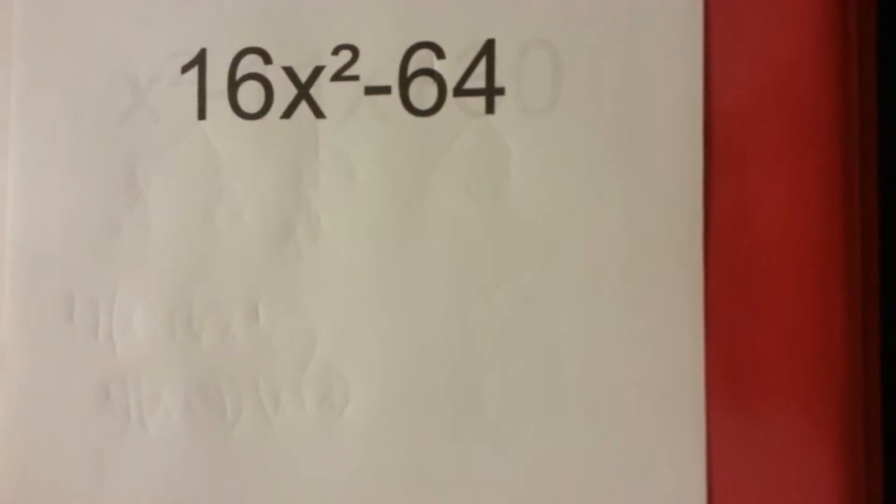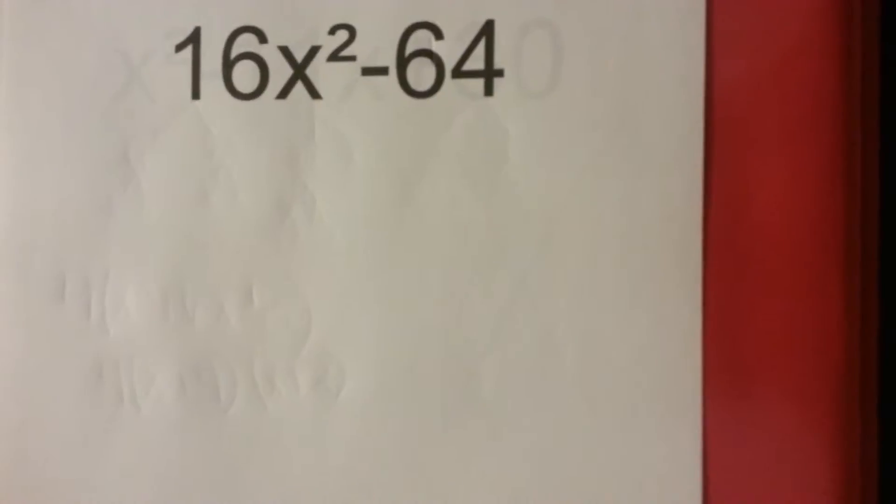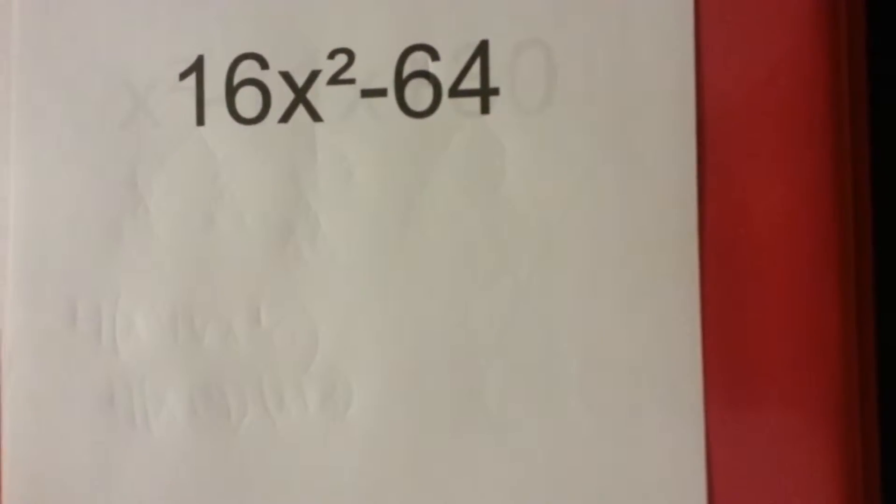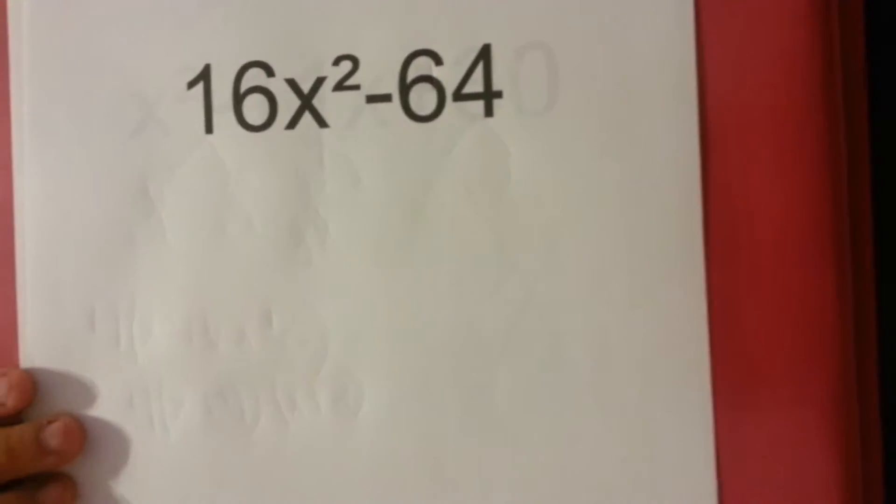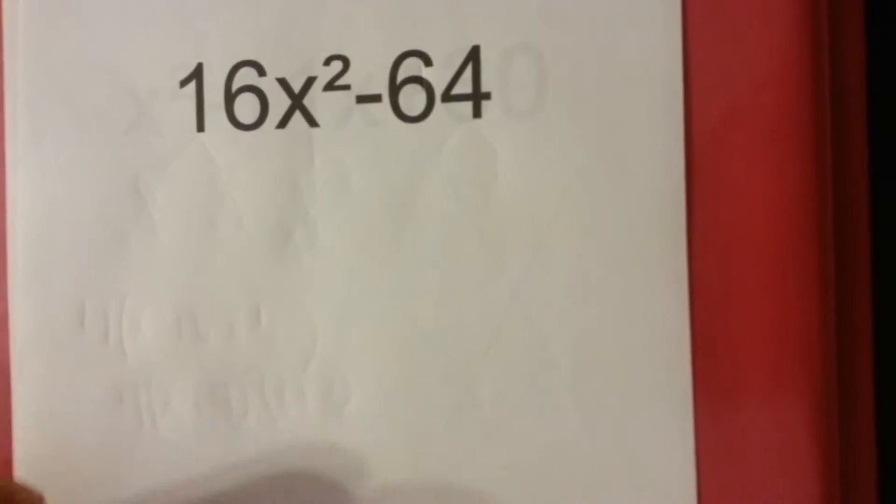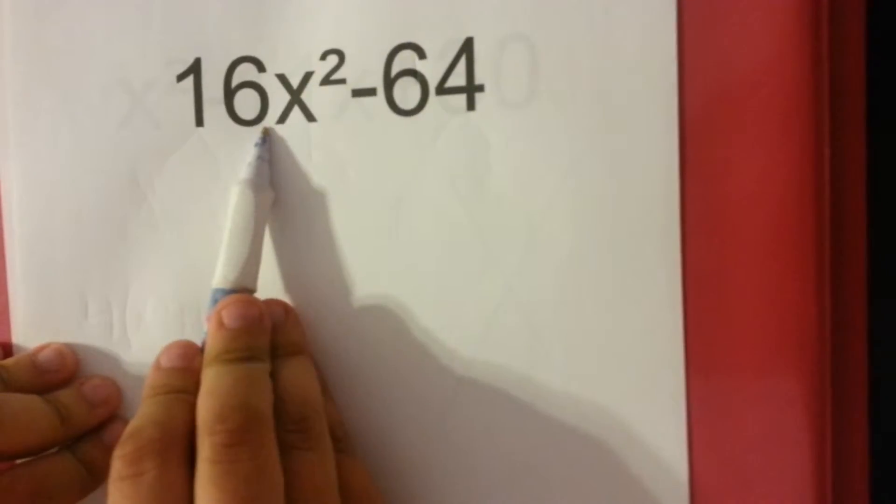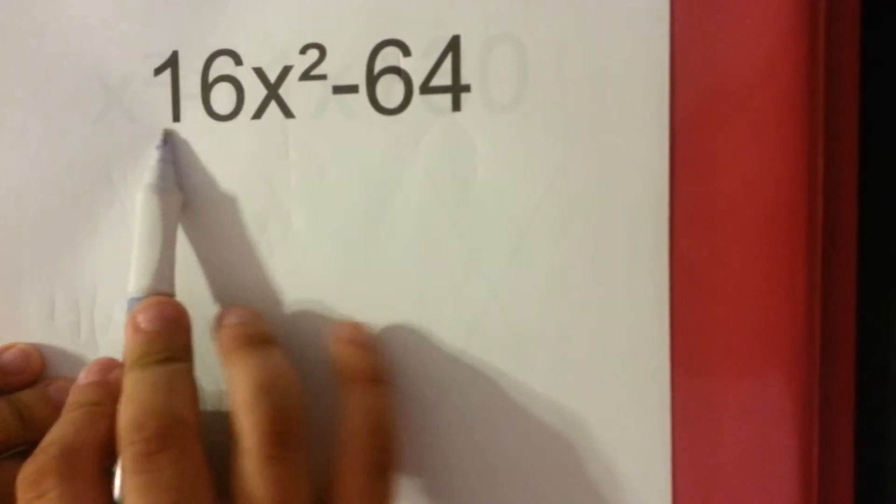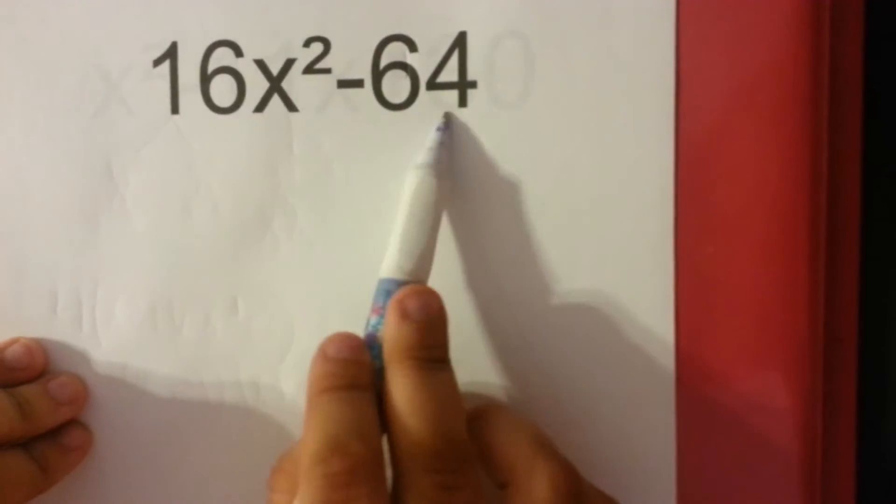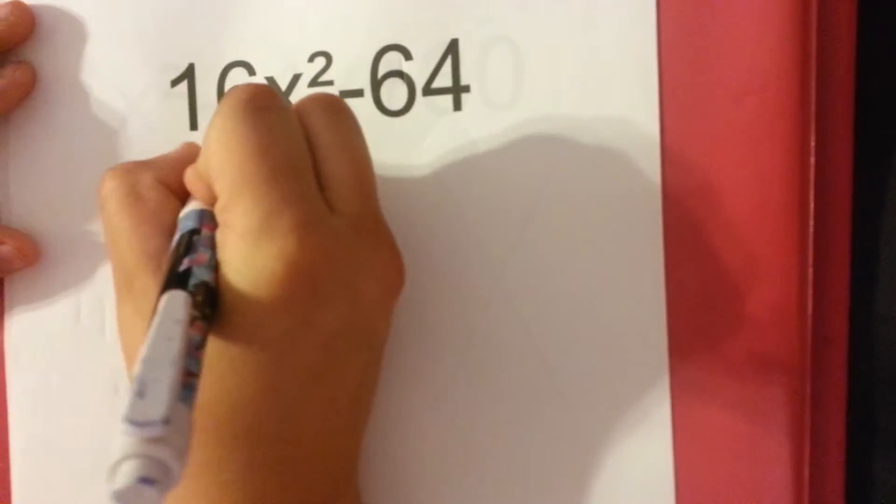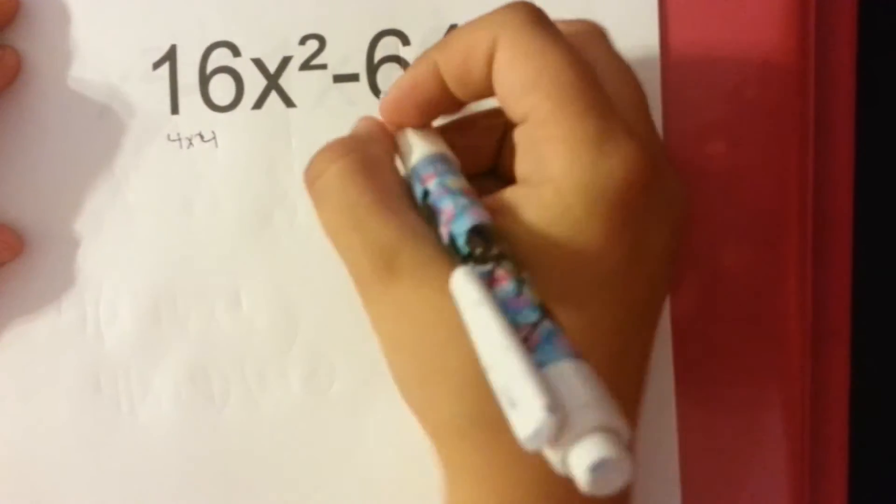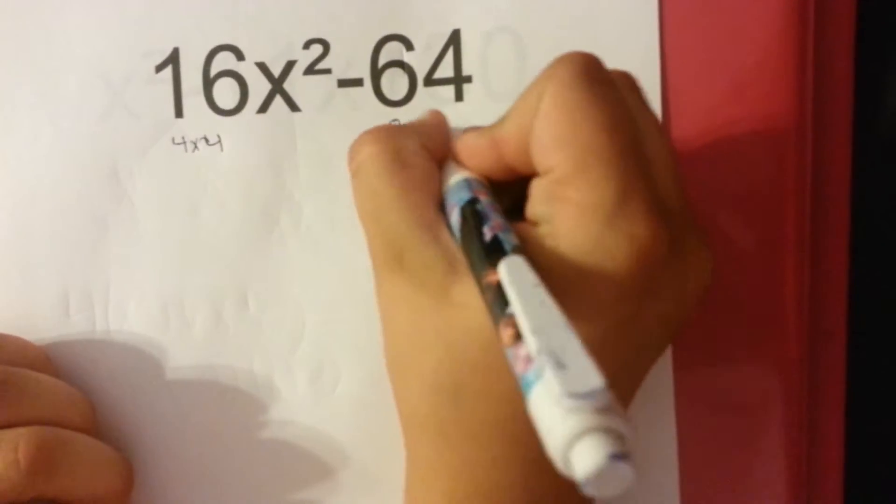Okay, next one we're going to be learning about is how to factor a quadratic expression using the perfect square method. So when you look at this, you can first see that 16 is a perfect square and so is 64. So you already know that this one would be 4 times 4 and this one would be 8 times 8.